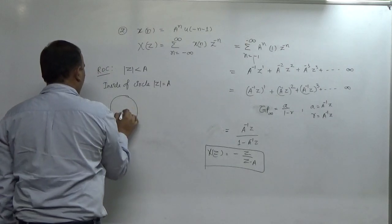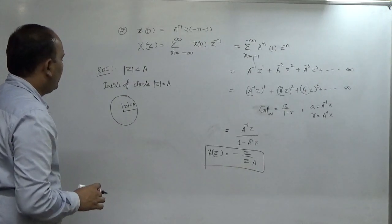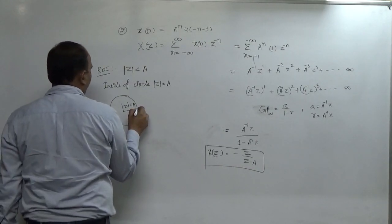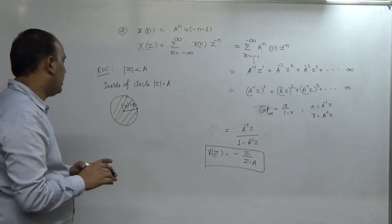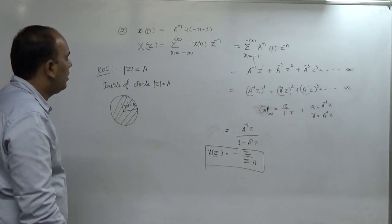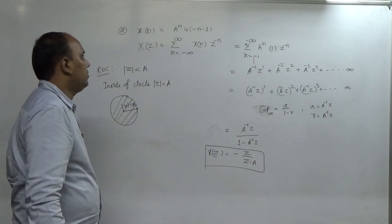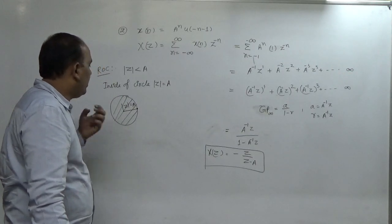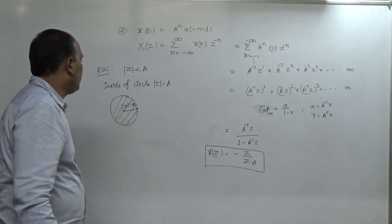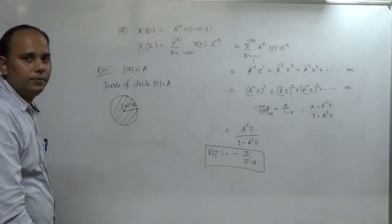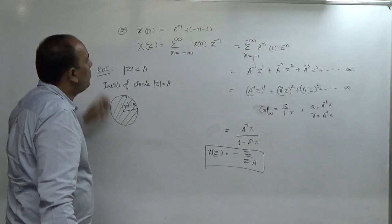Diagrammatically, this is represented by a circle |z| = a with center at the origin (0,0) and radius a. The ROC lies inside this circle, meaning the Z-transform of x(n) = a^n · u(-n-1) is defined only for values of |z| less than |a|. For values greater than |a|, the Z-transform is not defined. That is how we find the Z-transform of both these important functions.